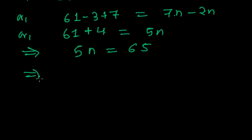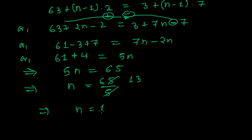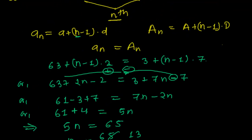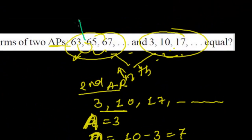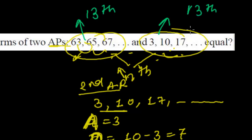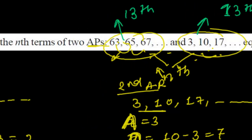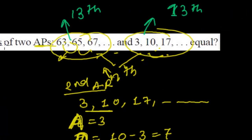So we got 5N = 65, and dividing both sides by 5, N equals 13. This means the 13th term of the first AP and the 13th term of the second AP are equal.